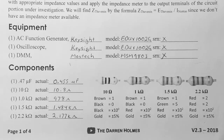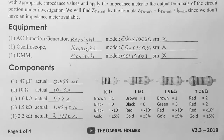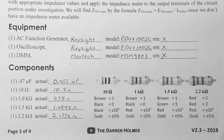Looking at our equipment: the AC function generator and oscilloscope will be the Keysight EDUX 1002G, which has a built-in function generator. The DMM we're using is the Mastech MSM9803. As in previous labs, I haven't bothered tracking down the serial numbers. For today's components, please make sure you measure your components to confirm you have the correct ones and that they are within tolerance.